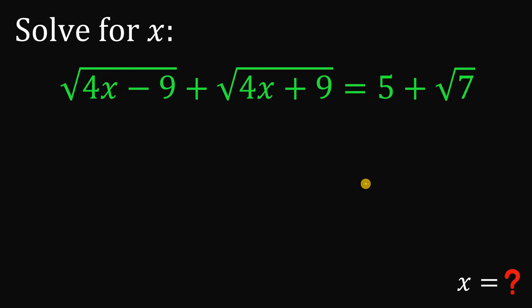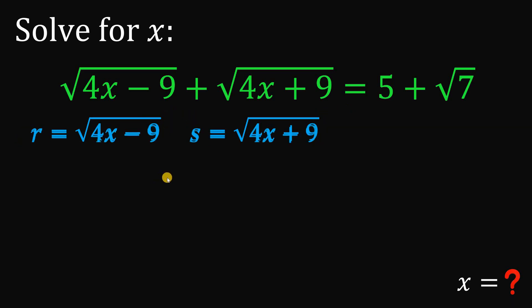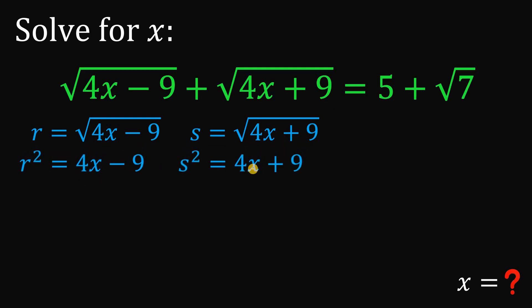To answer this question, I will use this chart. Let r be equal to the square root of 4x minus 9, and let s be equal to the square root of 4x plus 9. This is one of the possible ways to answer this kind of question. If we square on both sides, r squared and s squared must be equal to 4x minus 9 and 4x plus 9 respectively.